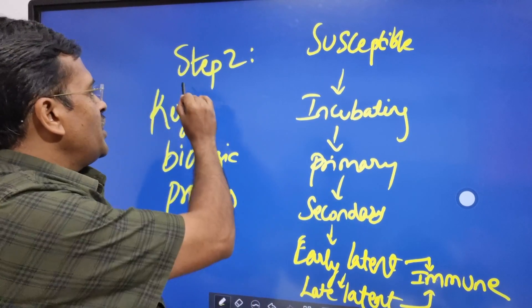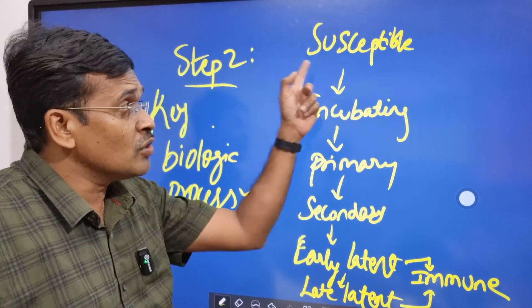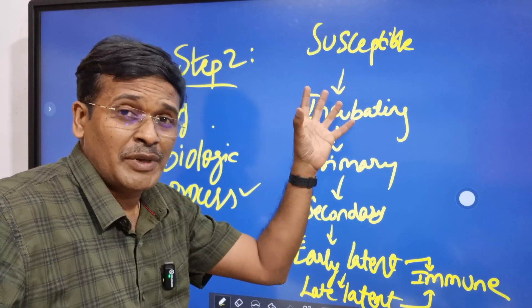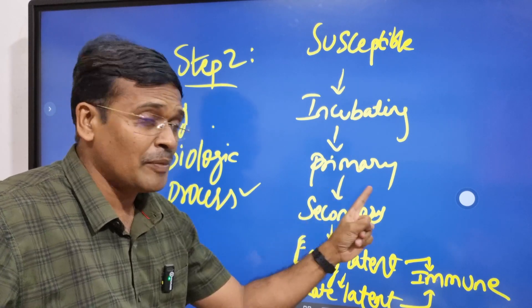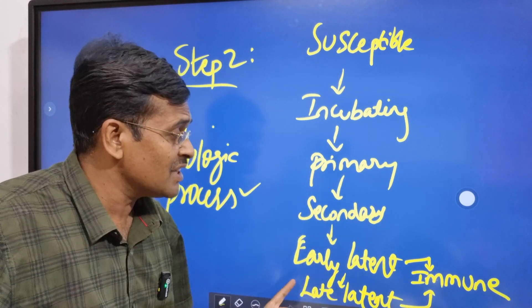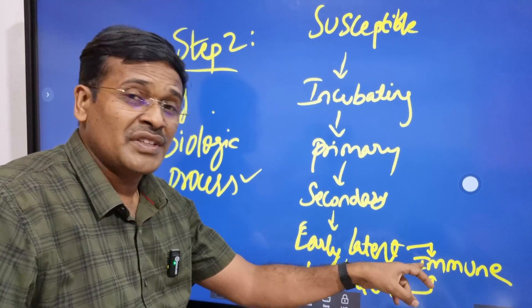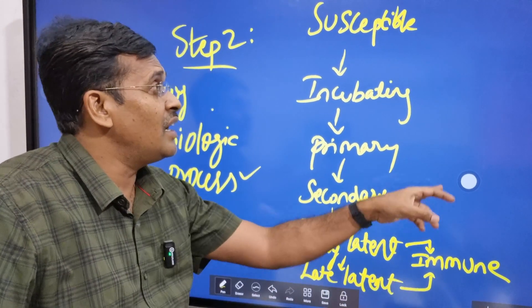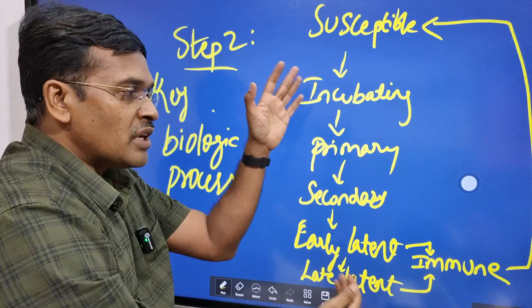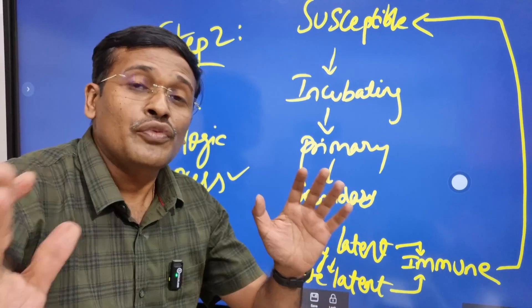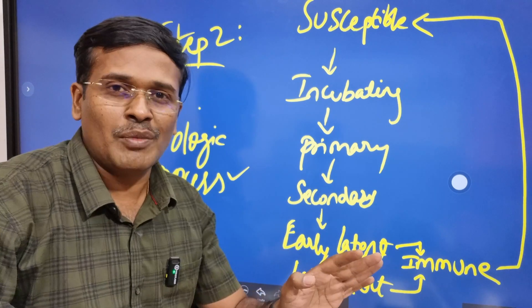Step two is identifying the key biological process. Here it is the natural history of syphilis — which population is susceptible, the transmission history, the susceptible population, incubating population, primary syphilis, secondary syphilis, early latent syphilis, late latent syphilis, the immunity status, and how they return to the susceptible pool. If you understand the natural history process properly, then we can input the model.